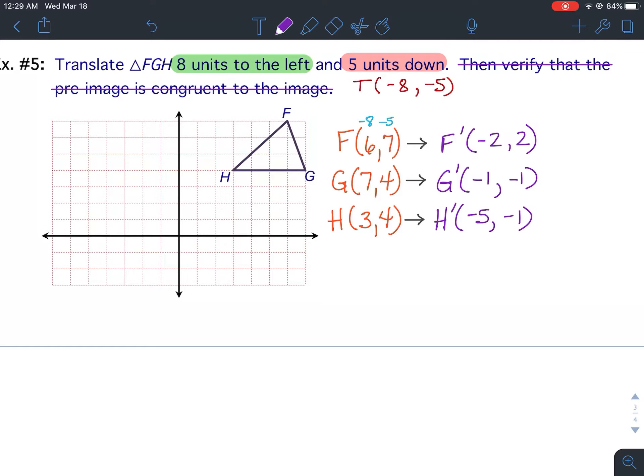Now we're going to plot these. So negative two, positive two, that's where F prime is. Negative one, negative one, G prime. And negative five, negative one is H prime.